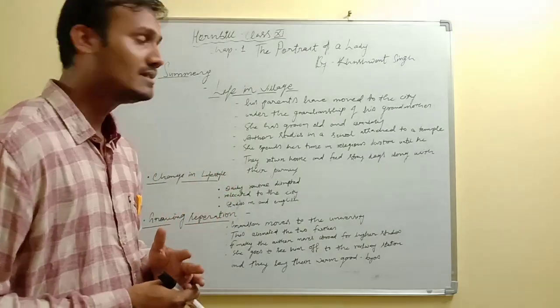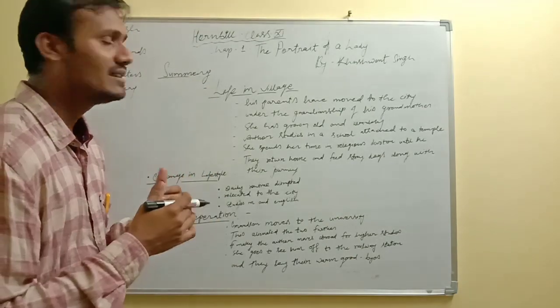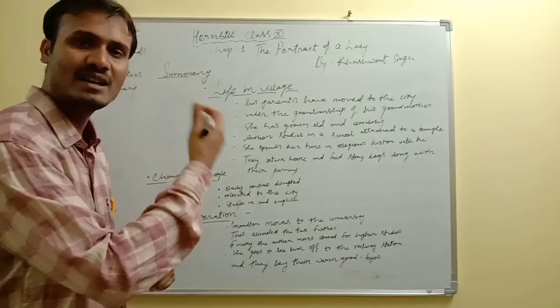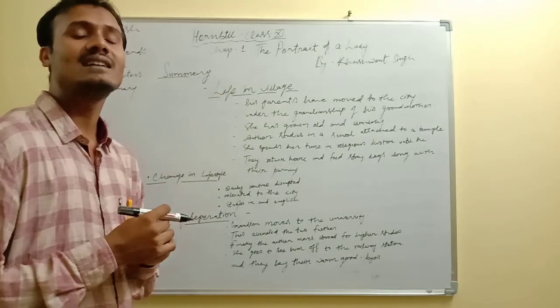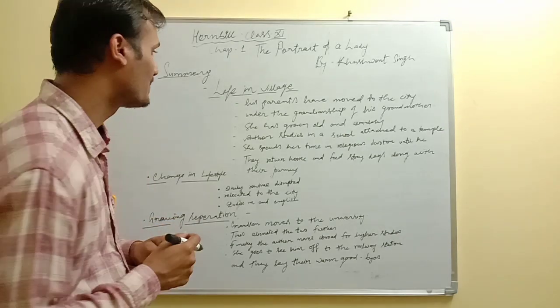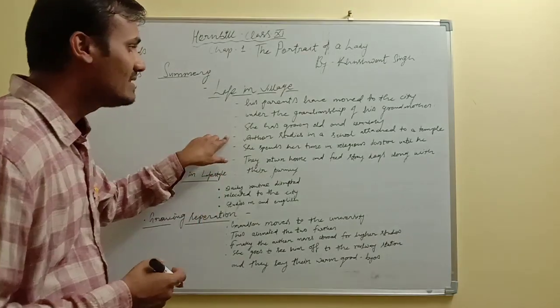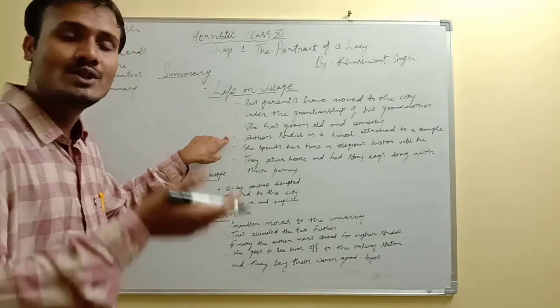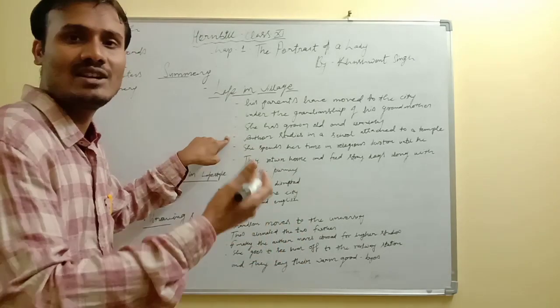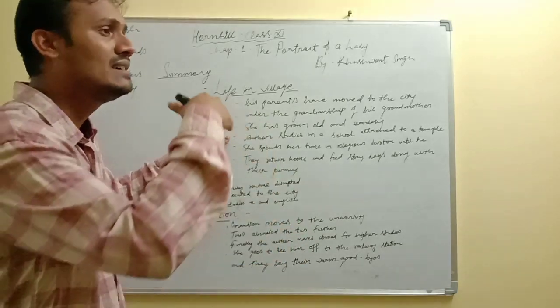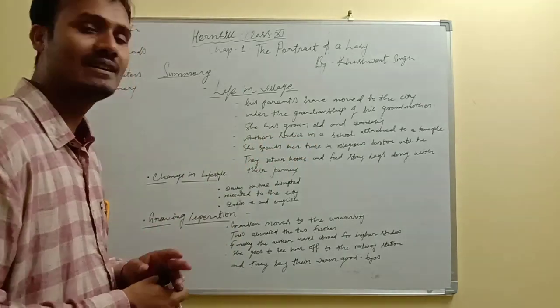Now let's summarize this chapter through these basic key points. First, life in villages. The author resides with his grandmother, who has become old. His parents have moved to the city, so he is totally under the guardianship of his grandmother. She has grown old and wrinkly, though she takes care of him very nicely. The author studies in a school attached to a temple. The grandmother escorts him and engages herself in devotional activities. When he finishes his study, the grandmother comes with her grandson, feeding stray dogs along their journey.